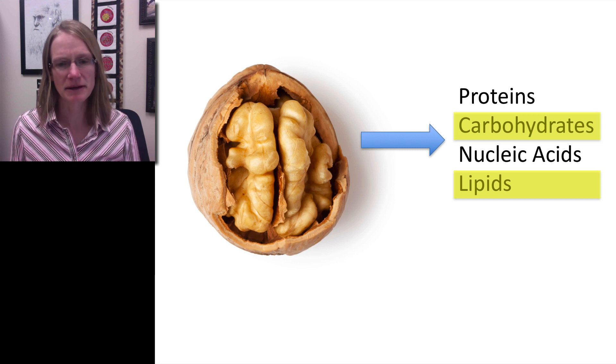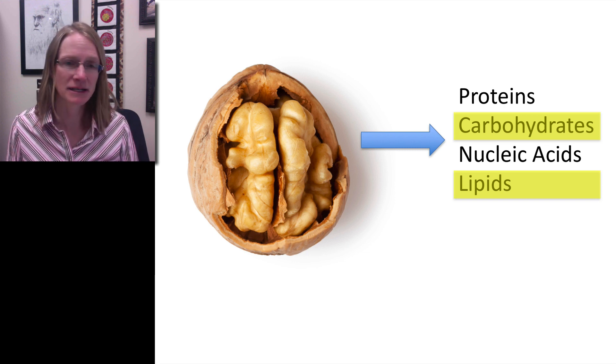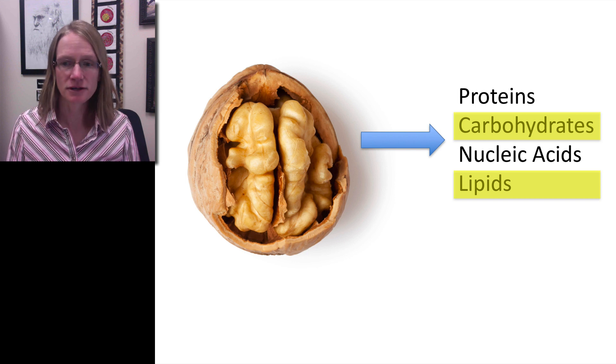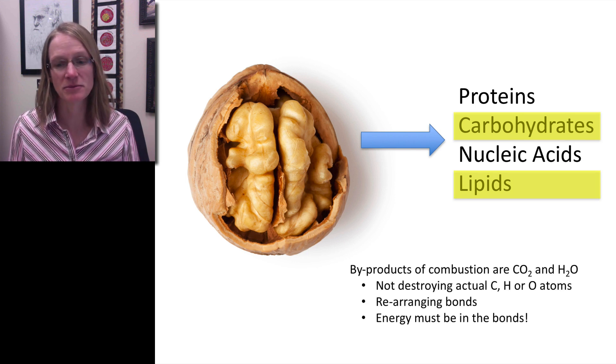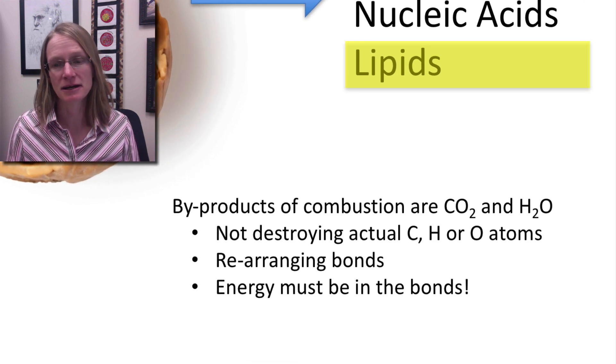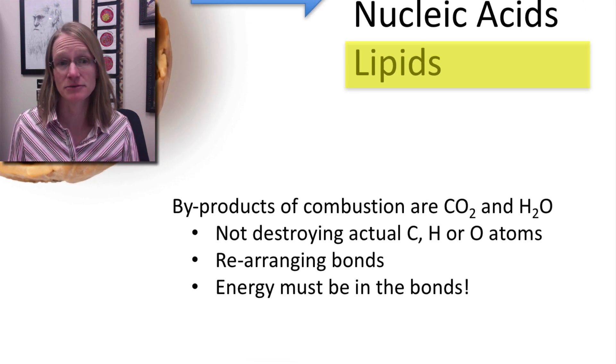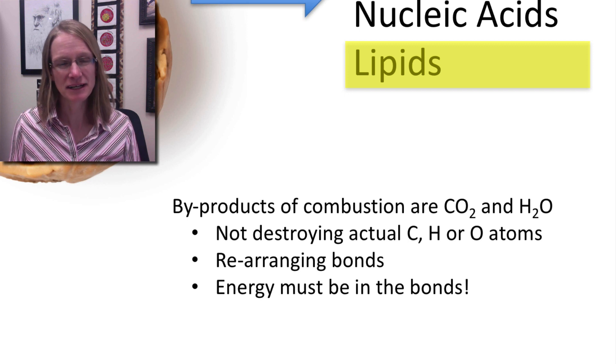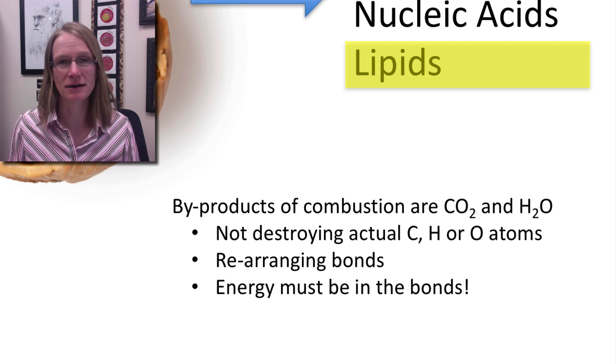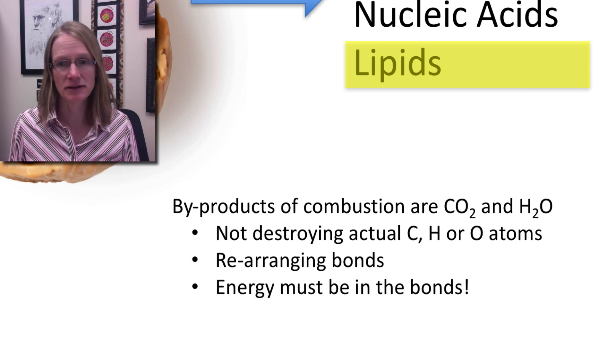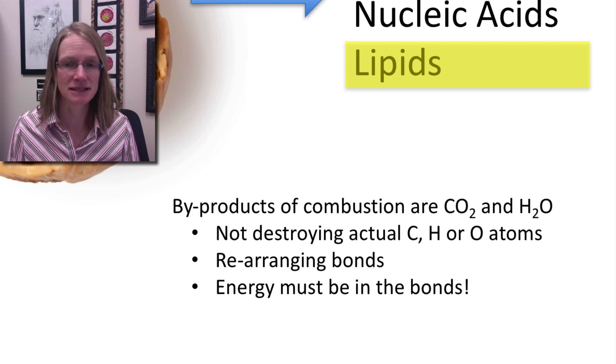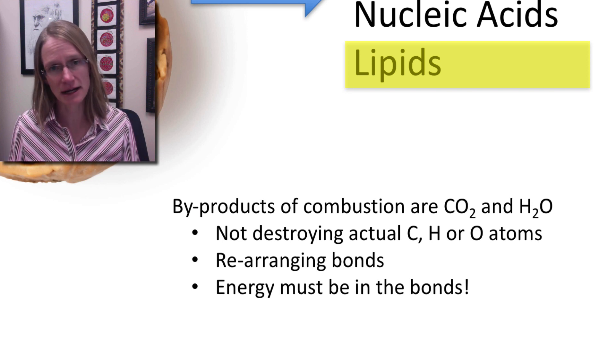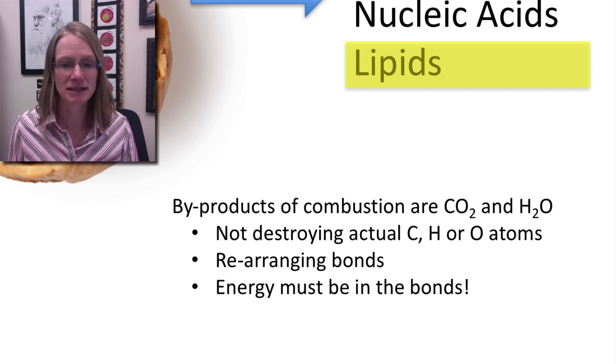If we talk a little bit about the combustion process, we know that we're going to actually be taking all of those carbohydrates and lipids and combusting them. Through the process we know that the byproducts that come out as the combustion is CO2 and water. And so we're not actually destroying the carbon or the hydrogen or the oxygen atoms themselves. We know that they're actually still intact, but we're really just rearranging the bonds that keeps all of those things as a carbohydrate or what we know as a lipid intact.